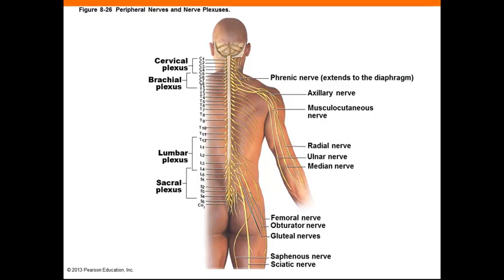This picture displays the spinal nerve plexuses and the distribution of some major nerves. The cervical plexus innervates muscles of the head, neck, and diaphragm. The brachial plexus innervates the shoulder girdle and upper limb. The lumbar and sacral plexuses innervate the pelvic girdle and lower limb. These nerves contain both sensory and motor fibers. We have 8 pairs of cervical nerves (C1–C8), 12 pairs of thoracic nerves (T1–T12), 5 pairs of lumbar nerves (L1–L5), 5 pairs of sacral nerves, and 1 pair of coccygeal nerves.